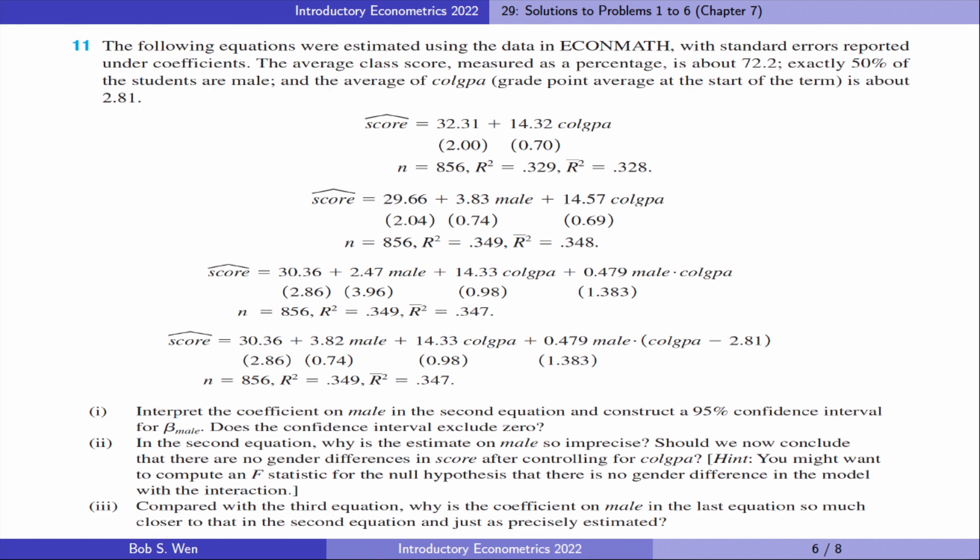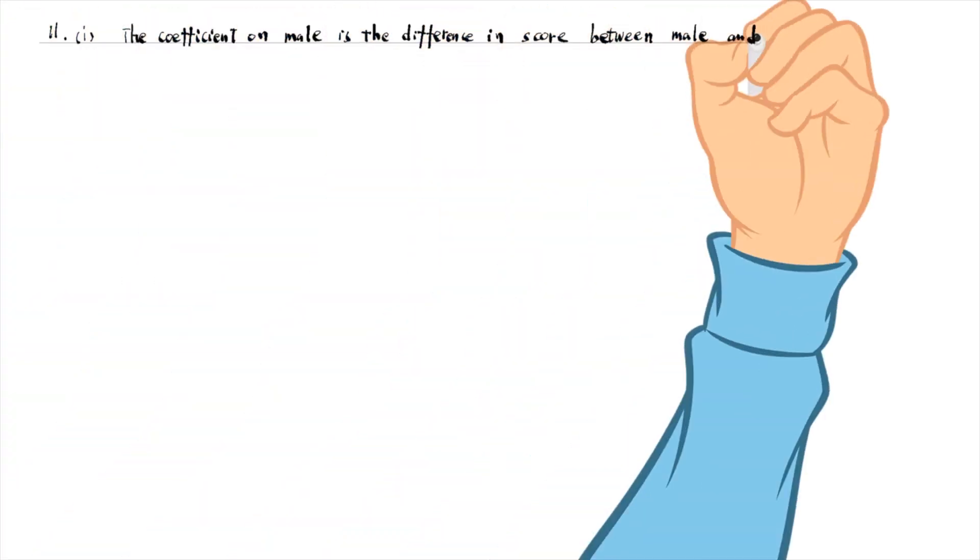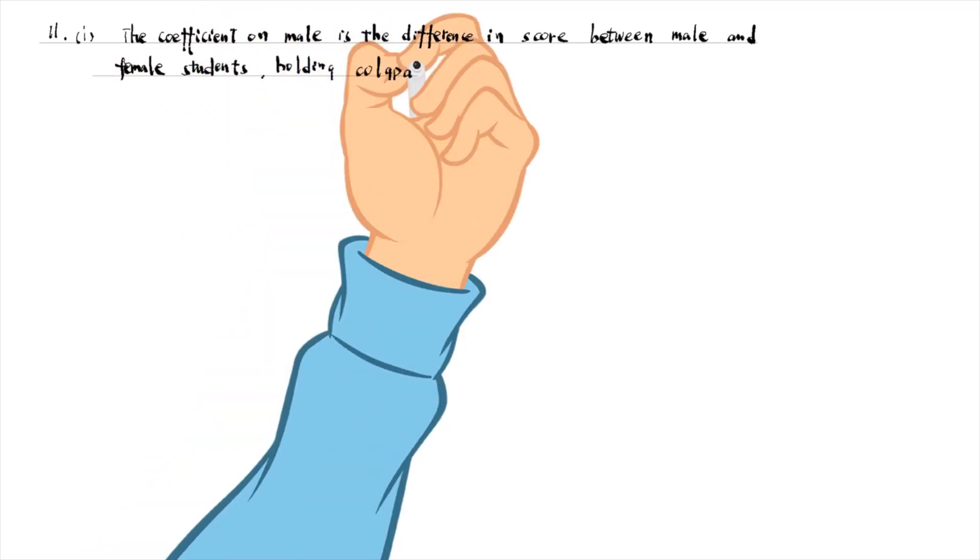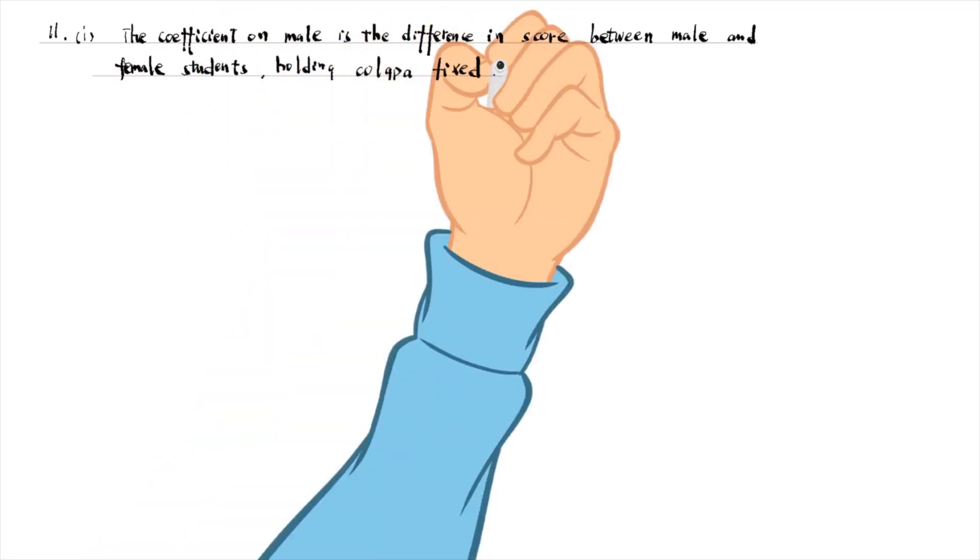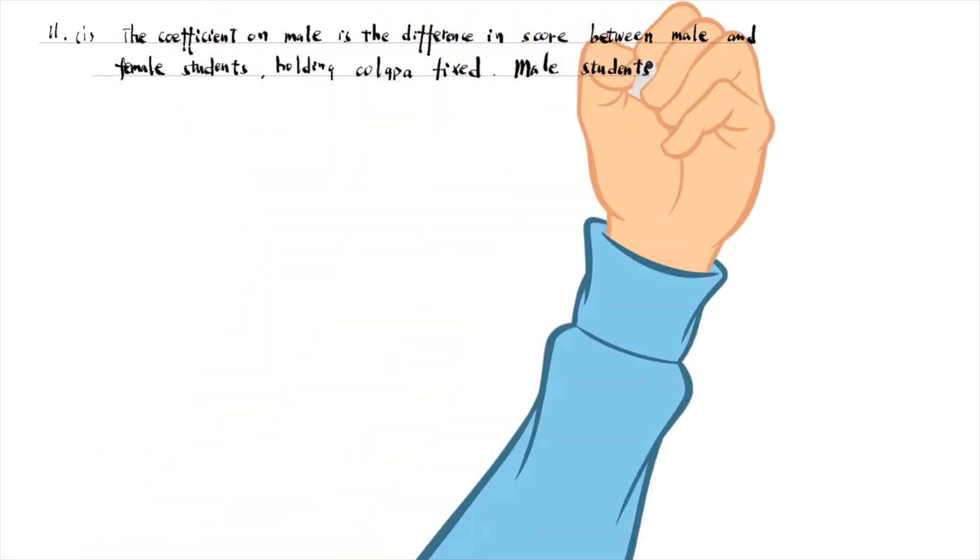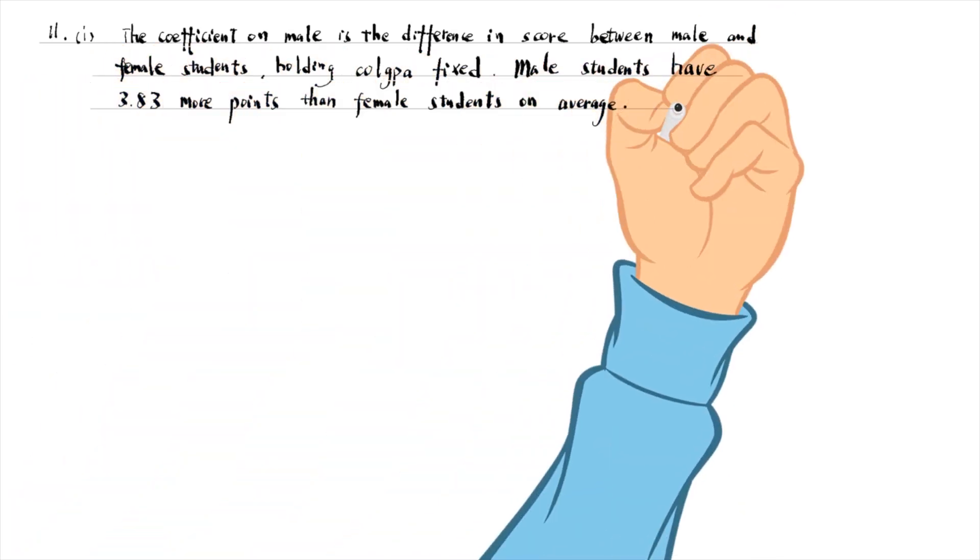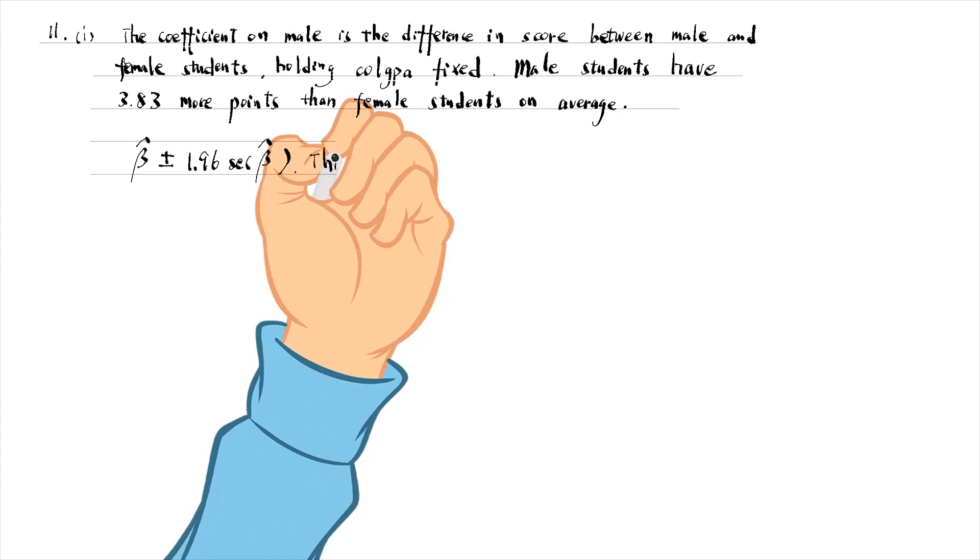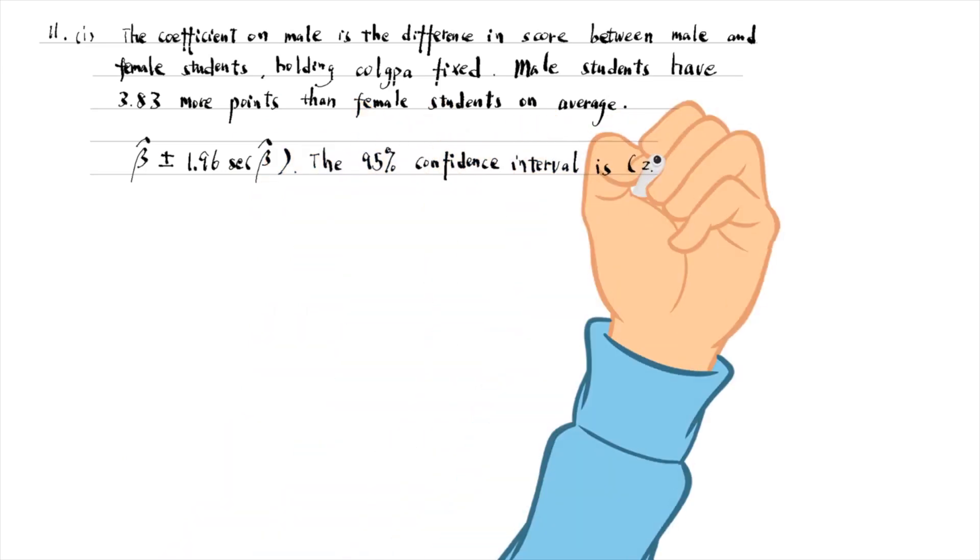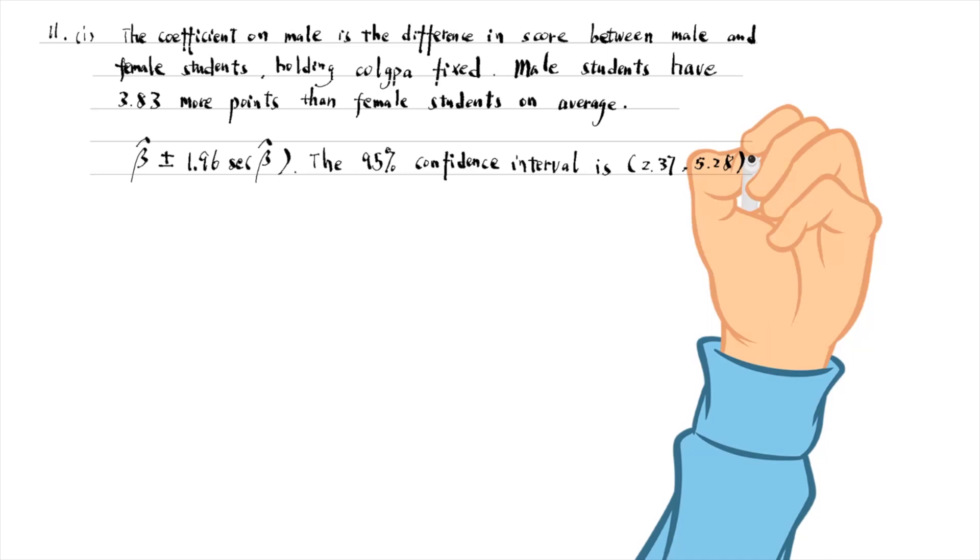Let's solve problem 11. In the second equation, the coefficient on male is the difference in score between male and female students holding college GPA fixed. Male students have 3.83 more points than female students on average. We compute the 95% confidence interval using the formula. It is from 2.37 to 5.28. It excludes 0.